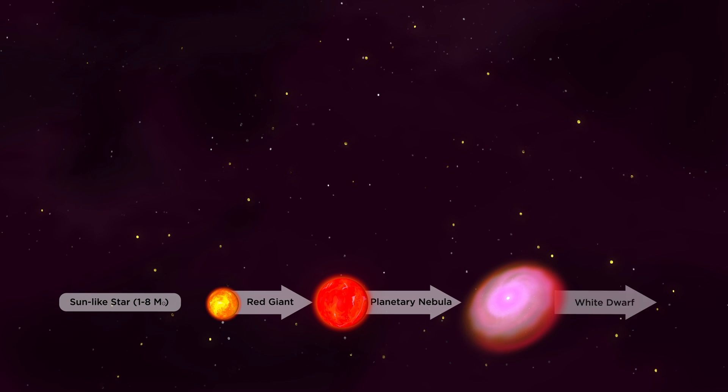In space stars evolve differently depending on their mass. Small Suns become red giants which leave a planetary nebula behind when they collapse to a white dwarf star.